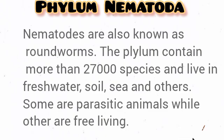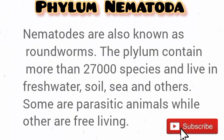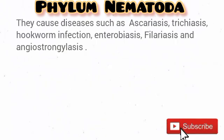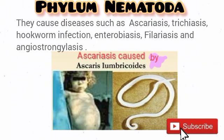Organisms under the Phylum Nematoda are generally regarded as nematodes and commonly called roundworms. This phylum contains more than 27,000 living species and they inhabit a variety of habitats such as soil, freshwater, and the sea. Some are parasites living inside or on the body of living organisms, causing a variety of diseases.